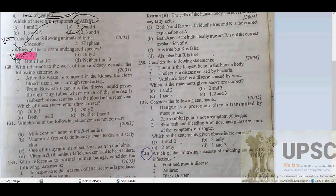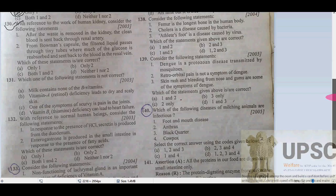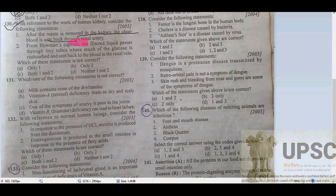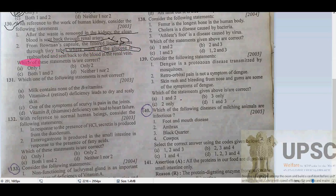Question 130 refers to the work of the kidney. After waste is filtered in the kidney, clean blood is sent back — but statement one is wrong. From the Bowman's capsule, the filtered liquid passes through tiny tubules where glucose is reabsorbed and sent back to the blood in the renal band — that is correct.